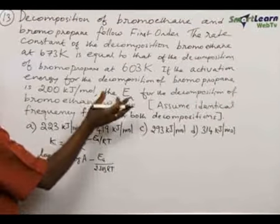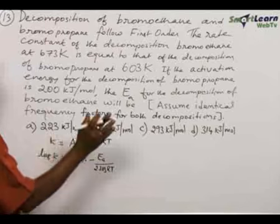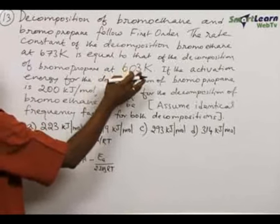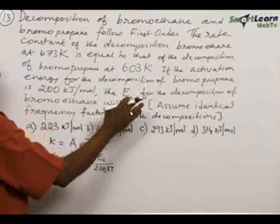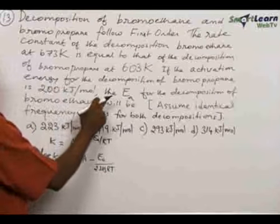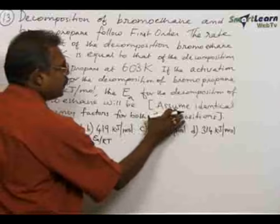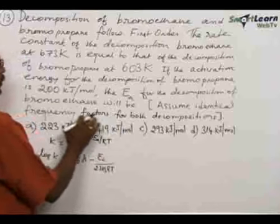Rate constants for both decompositions are equal at two different temperatures for the decompositions of bromoethane and bromopropane. One activation energy is given, the other to be found out, and here we have to assume identical frequency factors also.